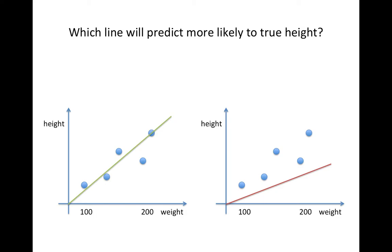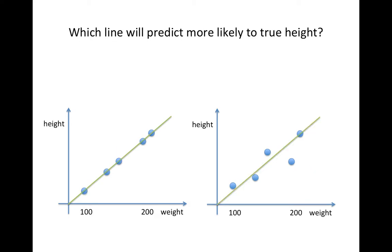Some of you say the left green line is the better prediction line. The left linear line is better than the right one, since the left line fits all the true heights while the right side linear line doesn't cover all observations. We can say the left linear line is better since it has the maximum likelihood estimate of the parameters of the linear equation.